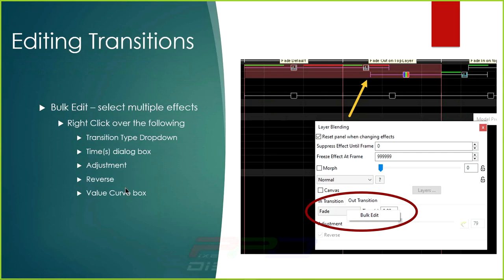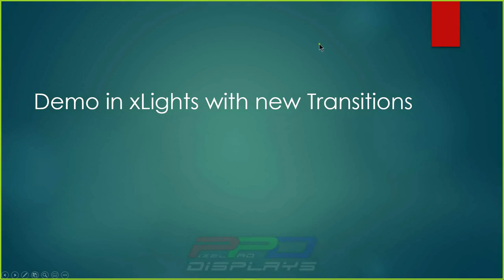You can bulk edit transitions. First, select multiple effects by clicking and dragging. Then right-click over the field you want to edit — for example, the transition type dropdown — and the bulk edit menu appears. You can bulk edit the transition type, timing, adjustment value, value curve, and reverse option. In fact, pretty much everything in the Layer Blending box supports bulk editing, including layer blending type, canvas mode, and freeze effect frame.